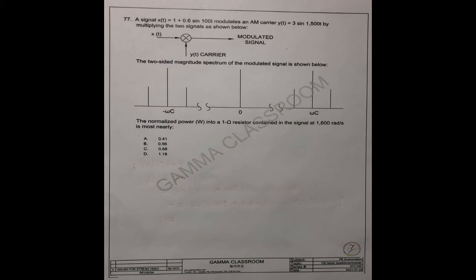The two-sided magnitude spectrum of the modulated signal is shown below. The normalized power into a 1 ohm resistor contained in the signal at 1600 radians per second is most nearly what?